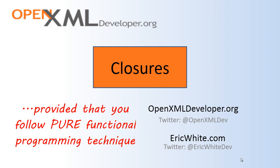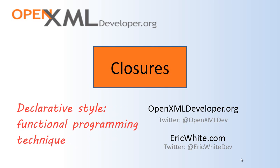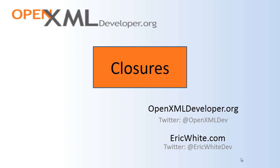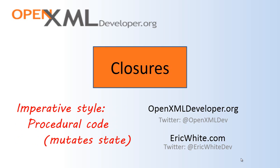There's a kind of a dichotomy between functional programming techniques. These are often called declarative programming techniques, or a declarative style of writing code, contrasted to procedural code, which is an imperative style of writing code. In other words, with declarative code you're saying what you want to have happen; with imperative code, you're saying how to do what you want to do.